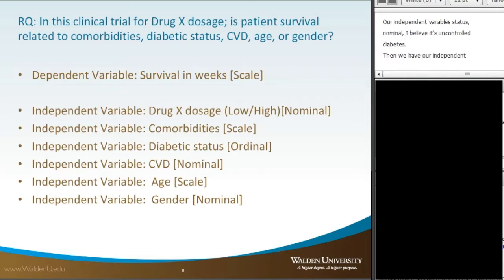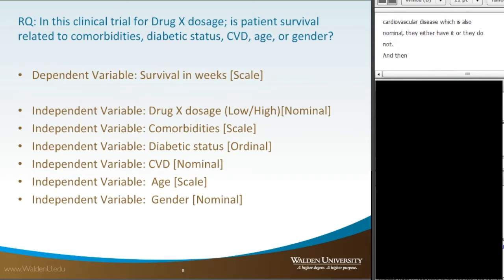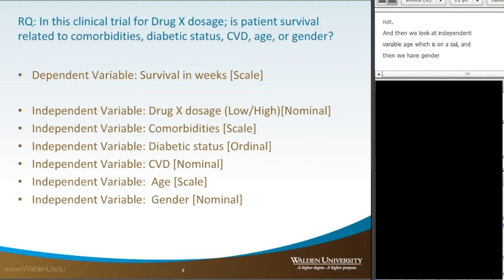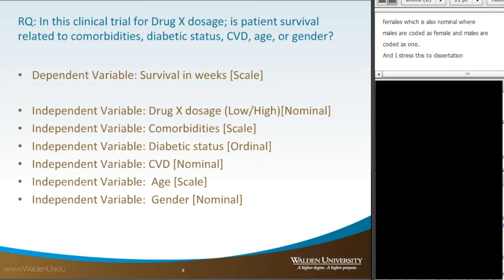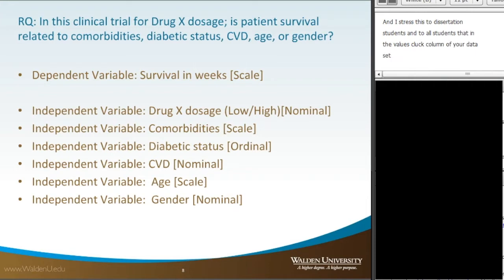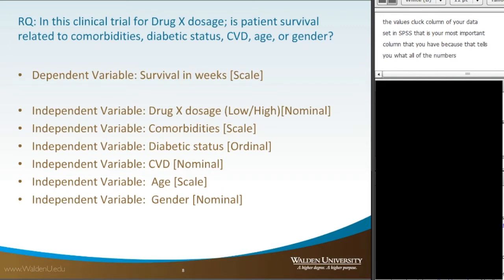We also look at age as an independent variable, which is on a scale, and gender, which is nominal — males and females — where males are coded as zero and females as one. I stress to all students, especially dissertation students, that in the values column of your SPSS dataset, that is the most important column because it tells you what all the numbers actually mean. This becomes very important in your APA write-up.